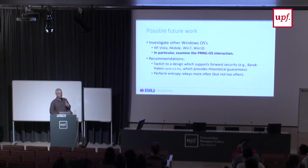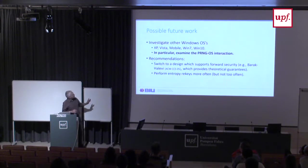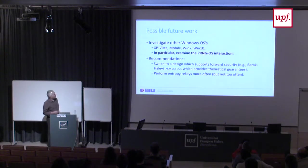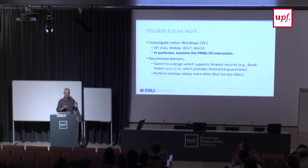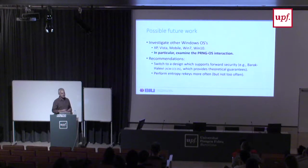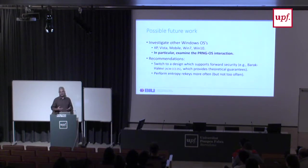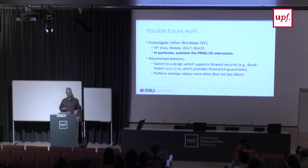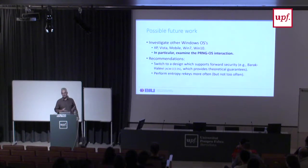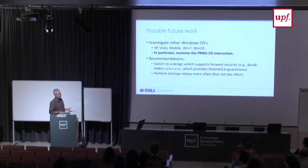Future work recommended: look at later versions of Windows like Vista, Win 7, Win 10 — which is probably secure. However, something people did not investigate is how you initialize the state: those 3,500 bits picked from different OS events. What's the entropy there? Perhaps there's no entropy in some area which later affects the entire state. It's a huge project, but if this is insecure, then everything is insecure. One recommendation is to switch to a design which supports forward security, and also to add entropy more often to limit the effect of a break-in.